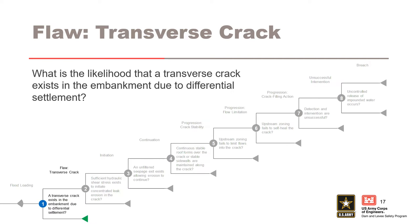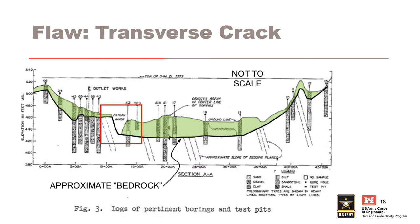For the first node — flaw: transverse crack — what is the likelihood that a transverse or upstream-to-downstream crack exists in the embankment due to differential settlement? As with any typical event tree, the event tree and descriptions for each node can be reworked for each specific situation. This figure is a profile along the centerline of the dam looking upstream. The heavy black line shows the original interpreted top of rock surface. Some of the overburden was removed, but most was left in place as shaded in green. The light gray angled dashed lines depict the dip of bedrock. The foundation profile in the red box will be examined more closely on the next slides.